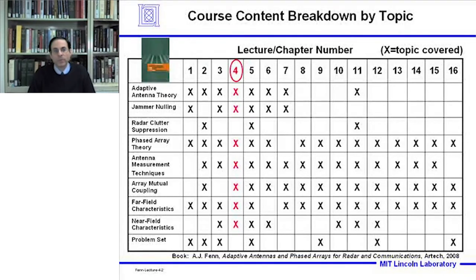We're going to be covering adaptive antenna theory in the context of jammer nulling, and we'll include some phased array theory. This would be considered an antenna measurement technique. We'll be analyzing array mutual coupling in this lecture for both far field and near field characteristics. The book Adaptive Antennas and Phased Arrays for Radar and Communications contains a great deal of information related to this lecture, and you could refer to that for more information.